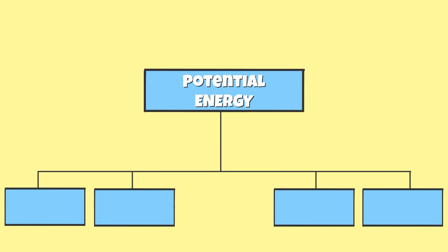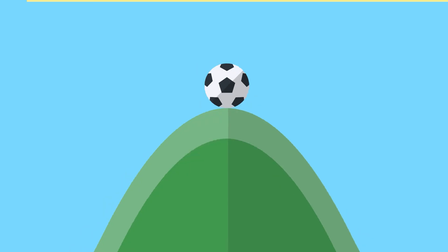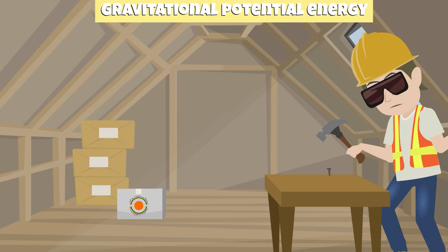There are four types of potential energy. Gravitational potential energy, such as a child on a slide, a ball at the top of a hill, or a hammer that is raised.